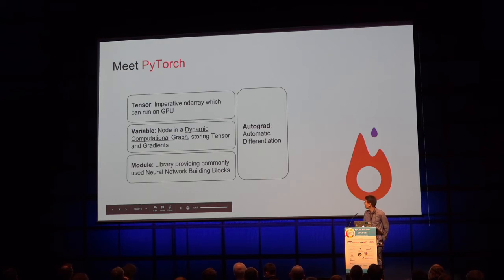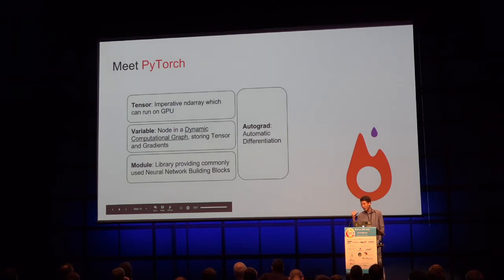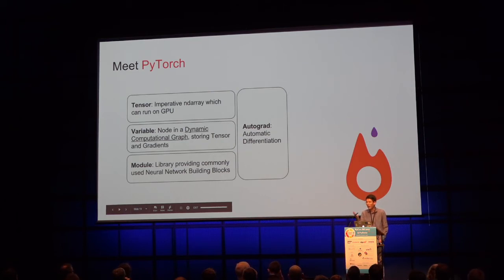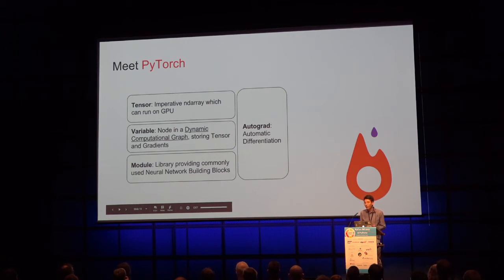PyTorch has three main abstraction layers. First, the tensor — basically a GPU-accelerated NumPy array. Second, the variable — a node in a dynamic computational graph, which helps automatically differentiate every computation so we don't have to calculate gradients by hand anymore. Third, the model layer — like TensorFlow's Keras — where you just write 'linear layer, 300 neurons' and it does everything for you.